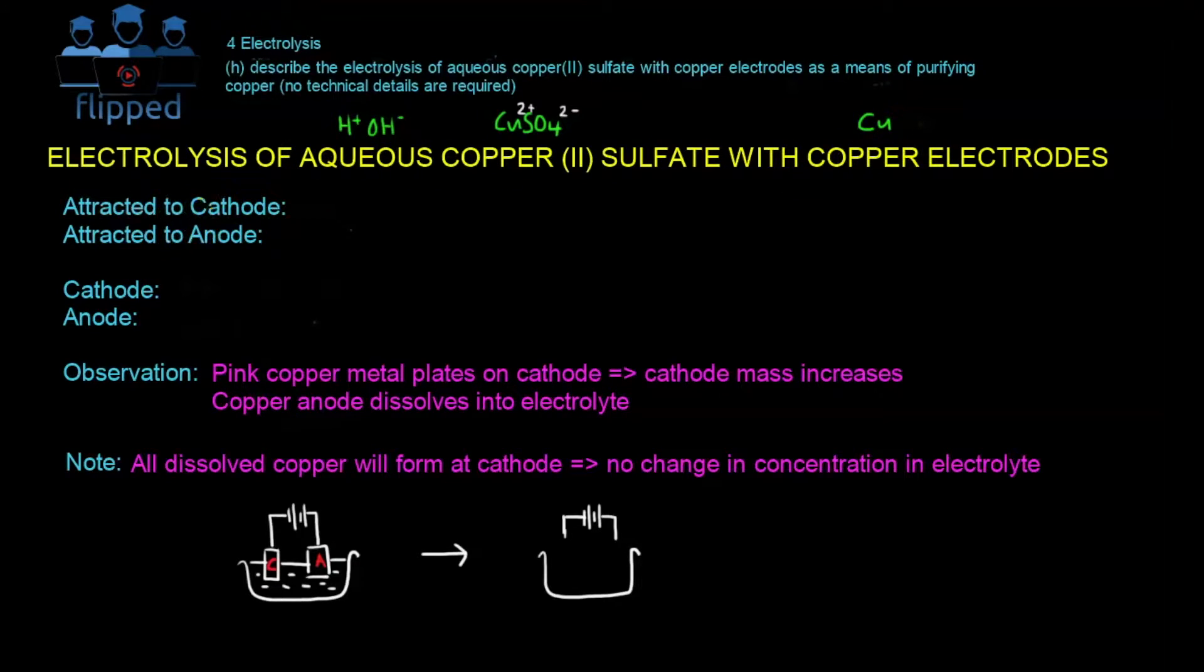So this one is standard. What is attracted to the cathode? Let's write down all the positive charges: H+ and Cu2+. Let's write down for anode first. Anode, it's all the minus charges: OH- and SO4 2-.